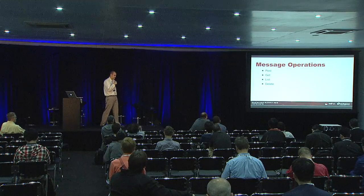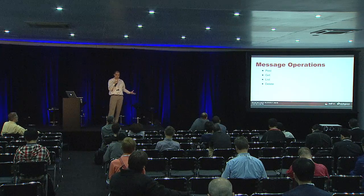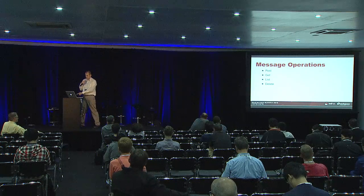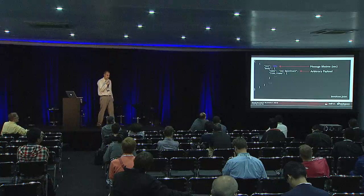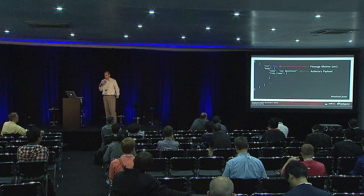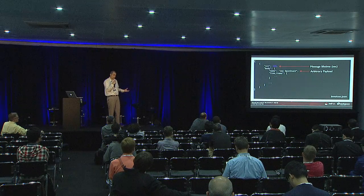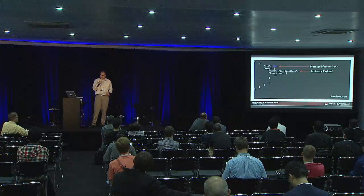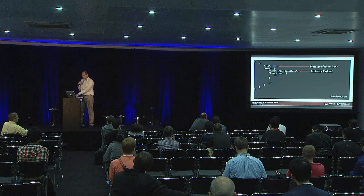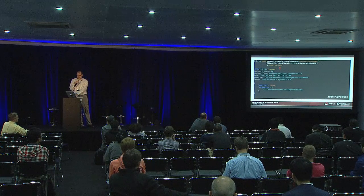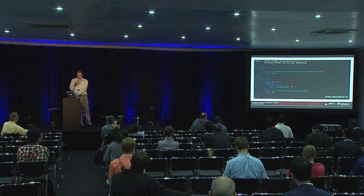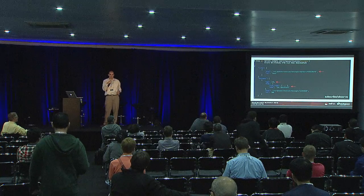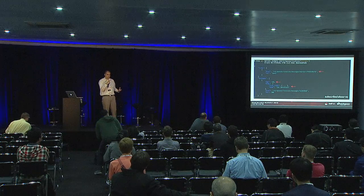Some message operations — again the usual suspects. You can post messages, get a single message, list those messages with pagination like an Atom or RSS feed, and of course delete messages. A message has a time-to-live which controls its lifetime — here I'm setting it for five minutes — and an arbitrary payload. As long as it's valid JSON, you can submit whatever you like; it's up to the application to interpret that. Here I'm setting some information useful for generating an invoice, and this shows posting that message and getting back a link. The pagination uses a clean, modern RESTful HTTP API design.